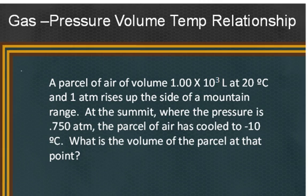A volume 1.00 times 10 to the third liters at 20 degrees Celsius and one atmosphere rises up the side of a mountain range. At the summit where the pressure is 0.750 atmospheres, the parcel of air has cooled to negative 10 degrees Celsius. What is the volume of the parcel at that point?